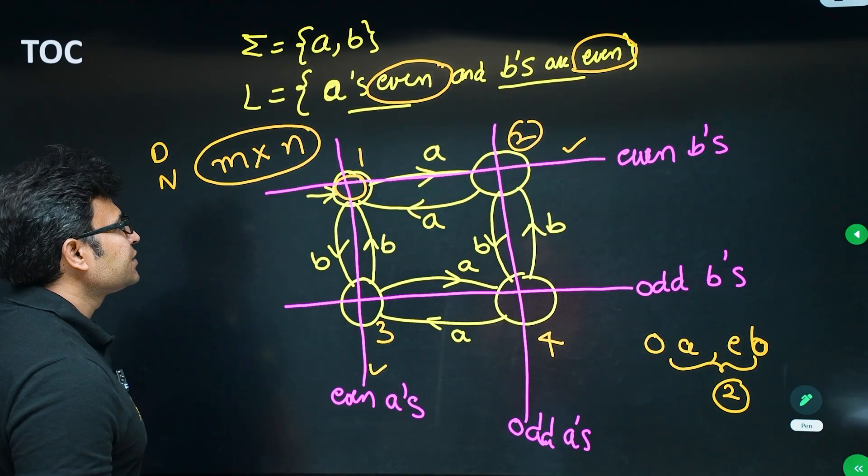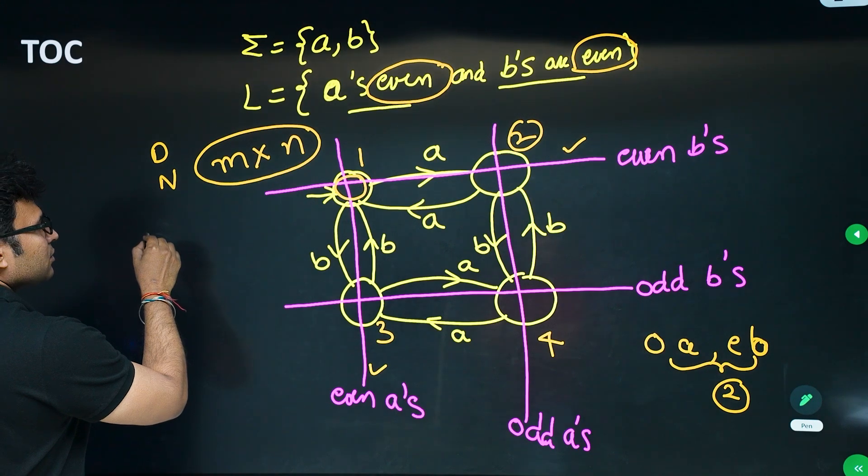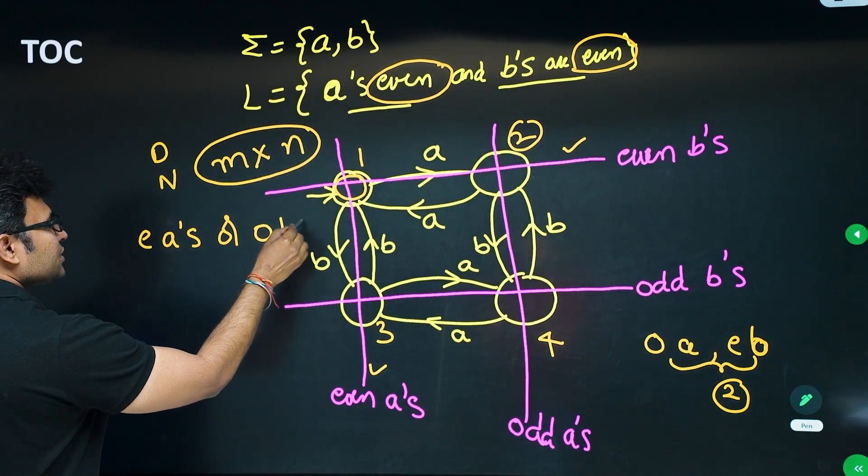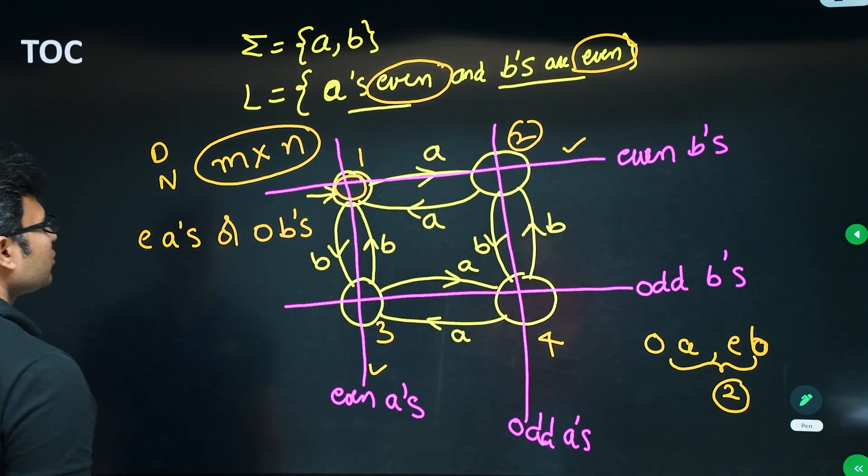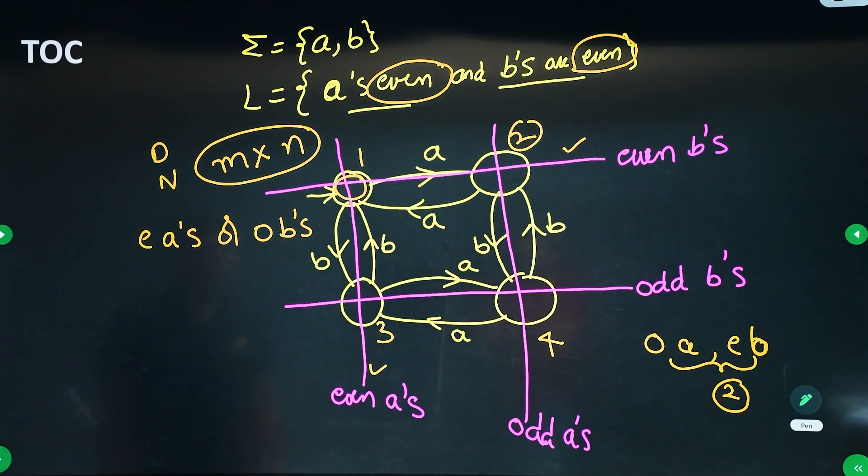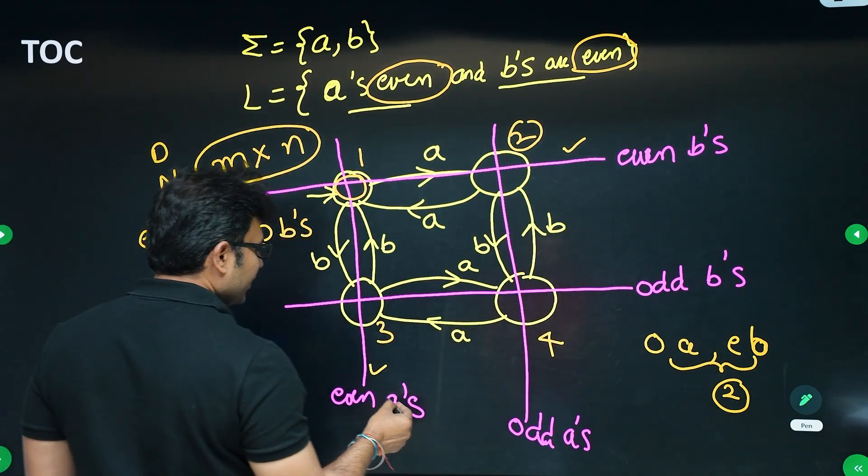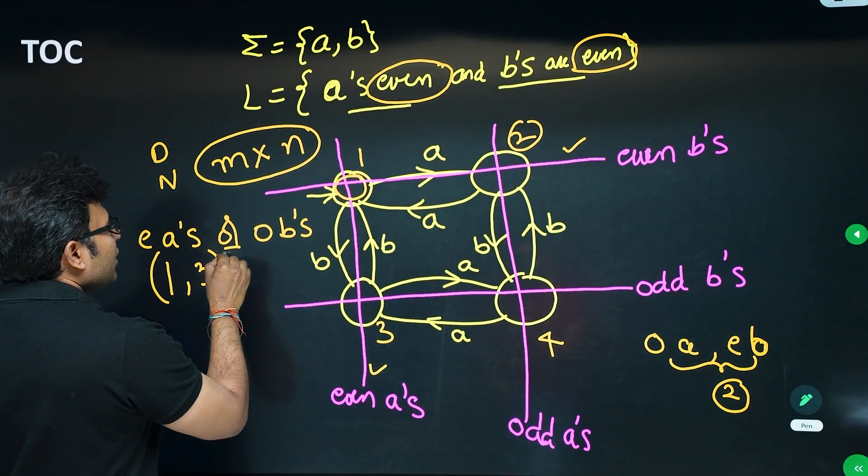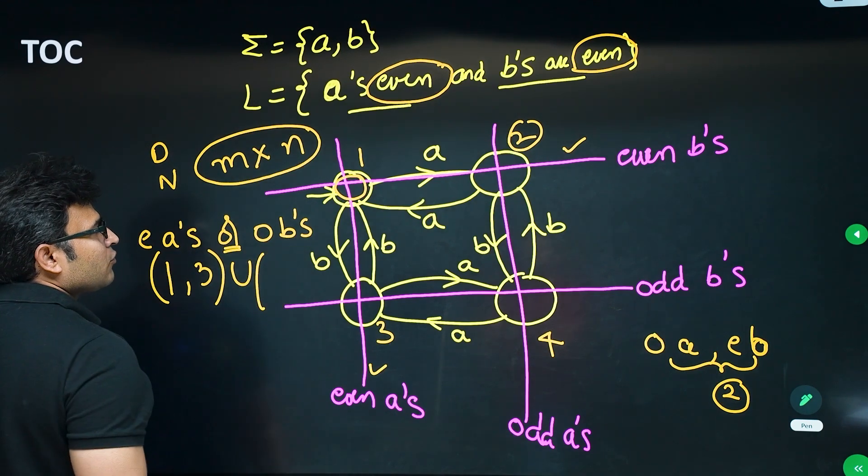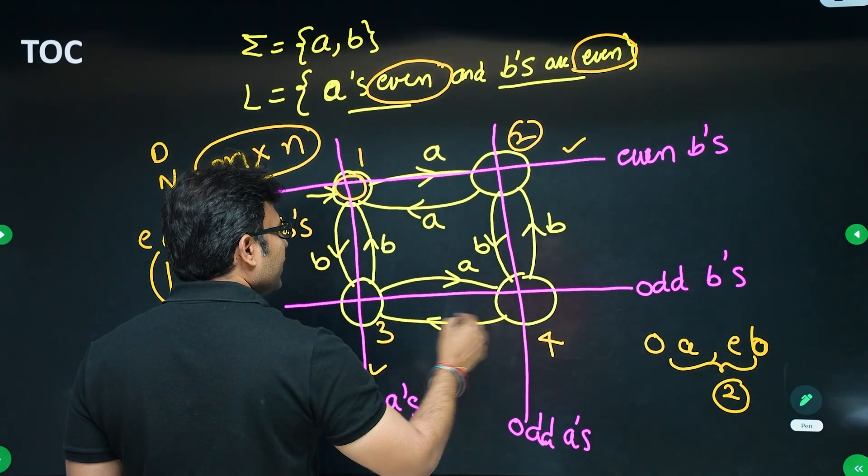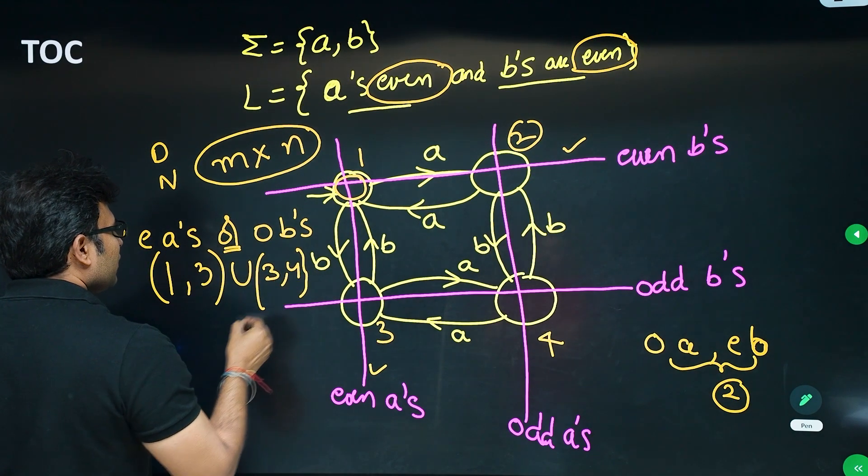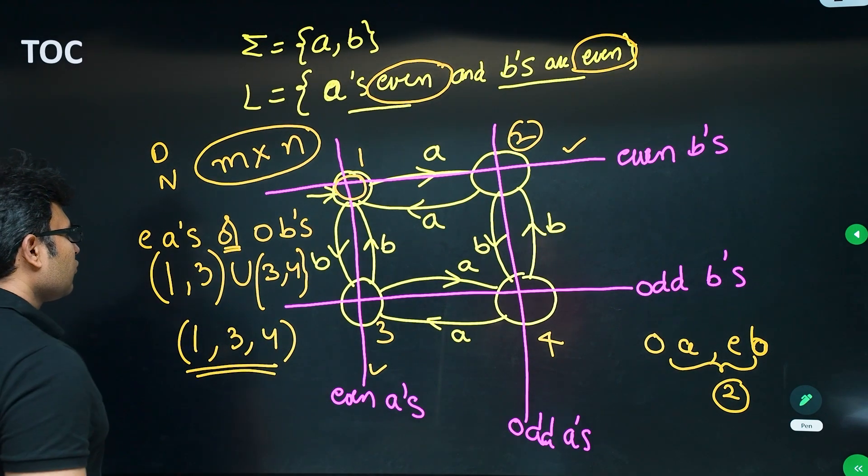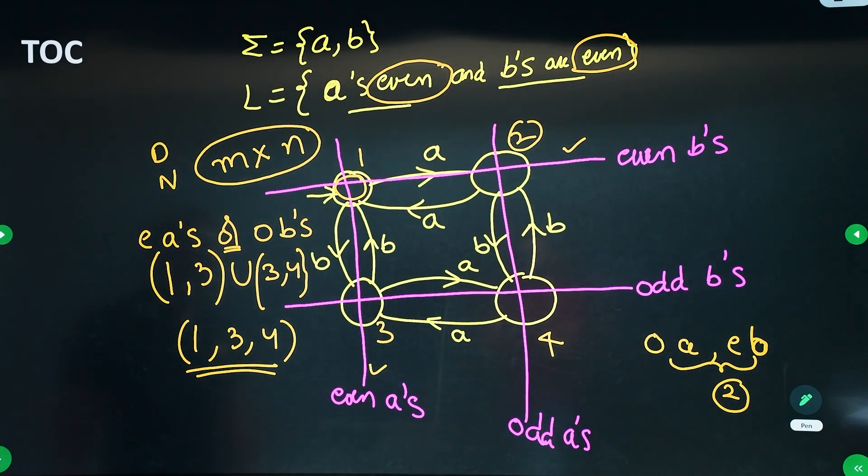In exam, they can ask you different questions. Let's say they're asking even number of a's OR odd number of b's. How are you going to find this? What is even number of a's here? Even number of a's is 1 and 3. OR is given - OR means union. What is odd number of b's? Odd number of b's is 3 and 4. Therefore, totally it is 1, 3, and 4. So I think that's all about this particular question.